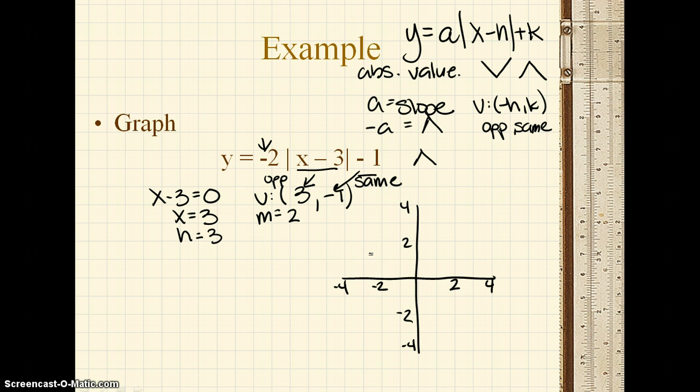And start by plotting the vertex. So again, the vertex is 3 negative 1. And then our slope is 2.